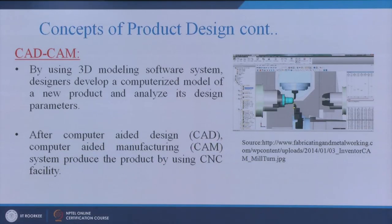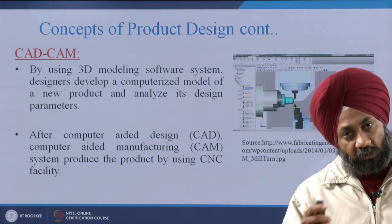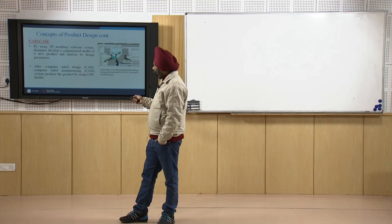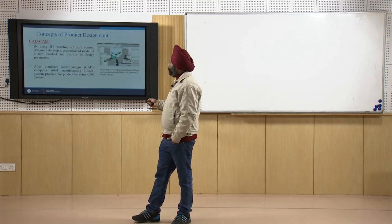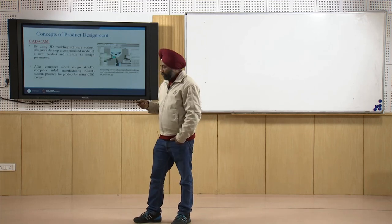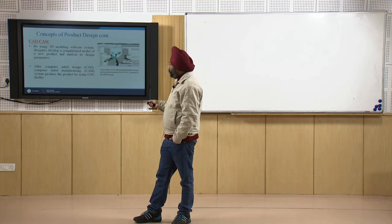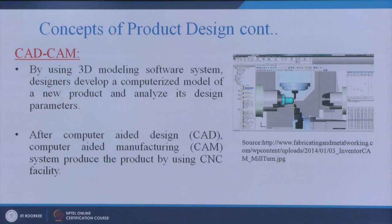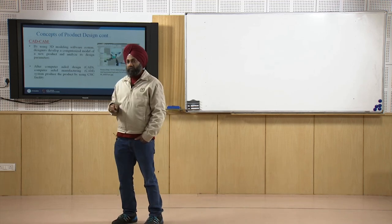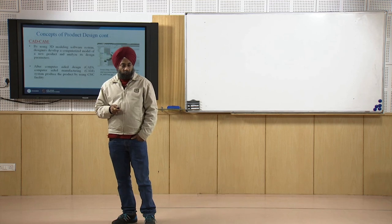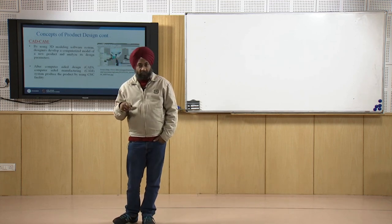CAD and CAM will also be covered when we discuss design tools. Using 3D modeling software, designers can develop a computerized model of a new product and analyze its design parameters. After the design is made using CAD software, computer-aided manufacturing techniques can be used for manufacturing that product. The CAD/CAM system produces the product using CNC - Computer Numerical Control - facilities.